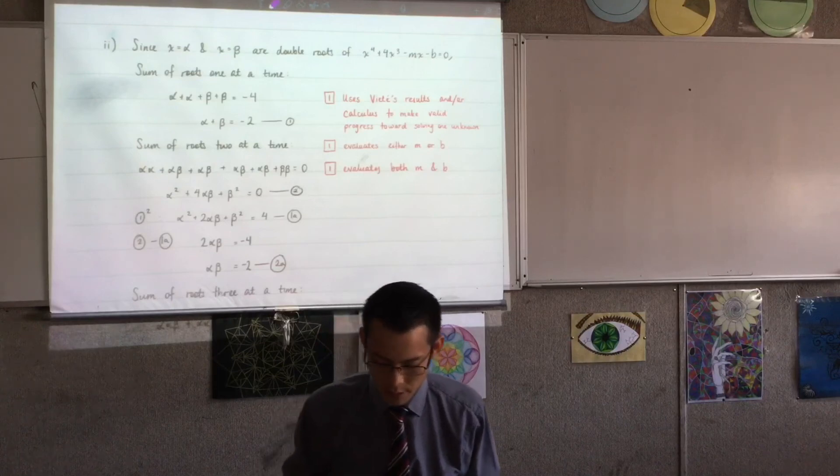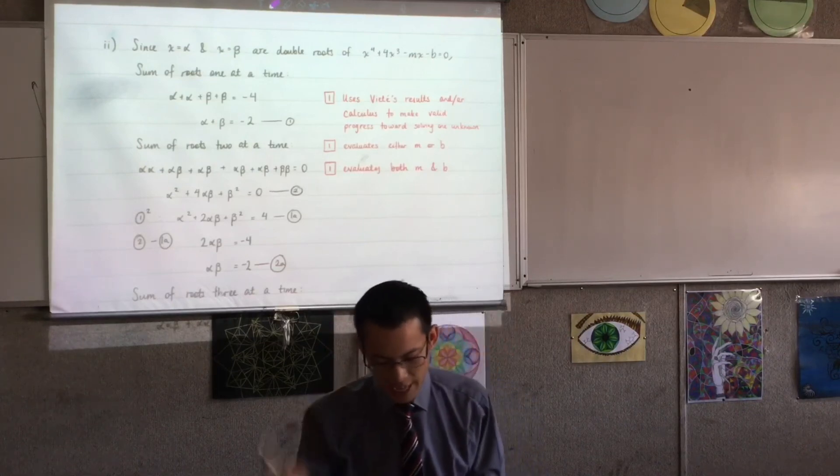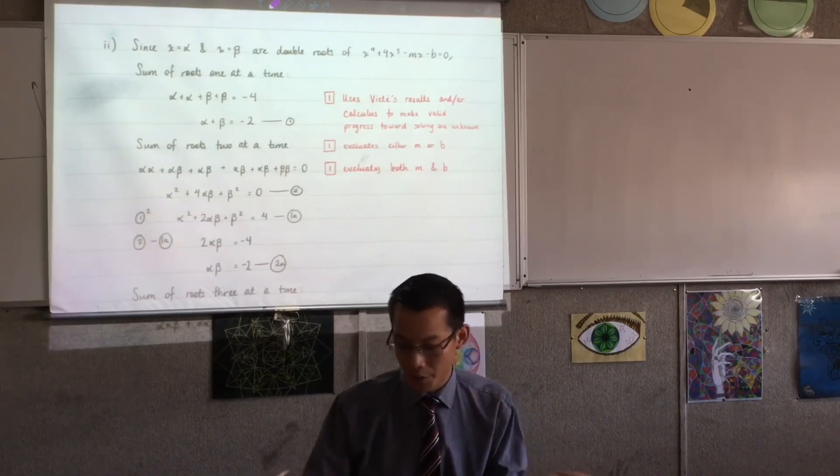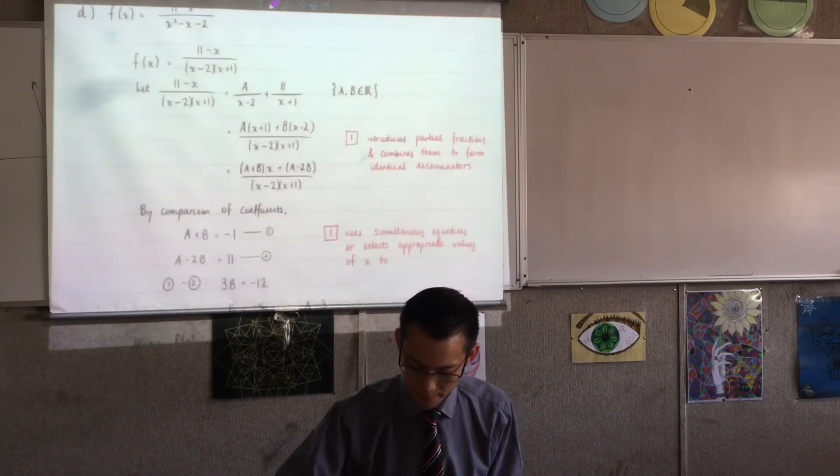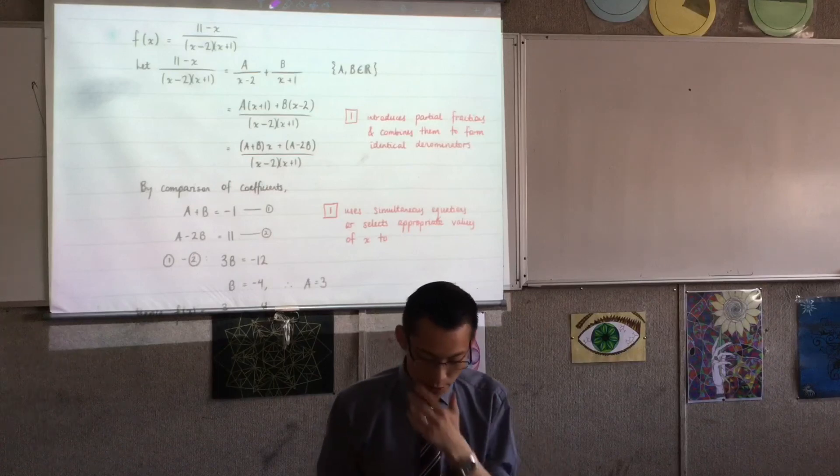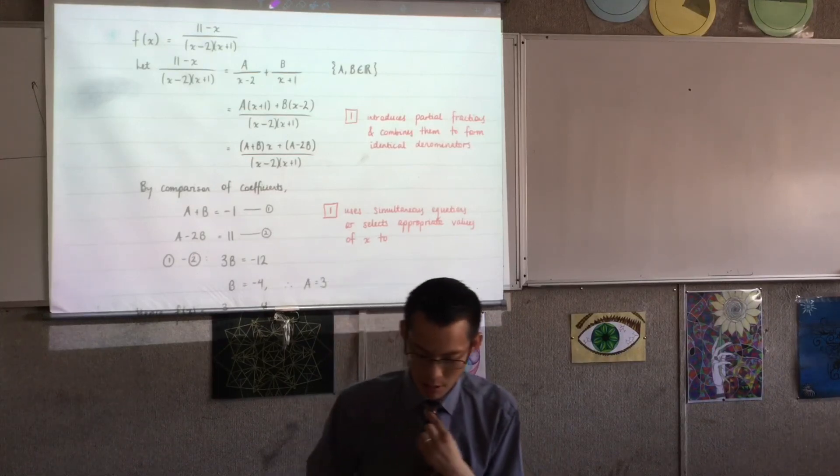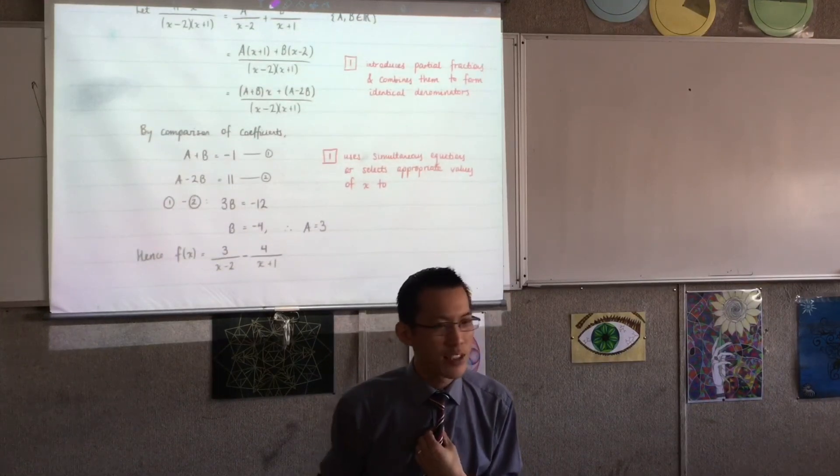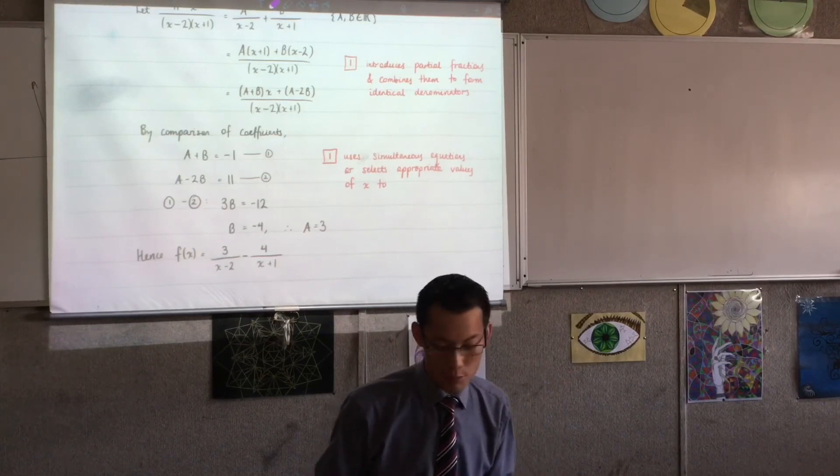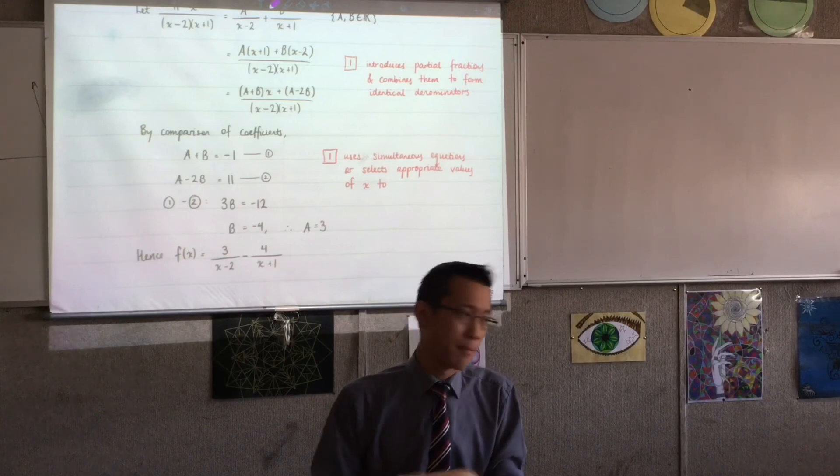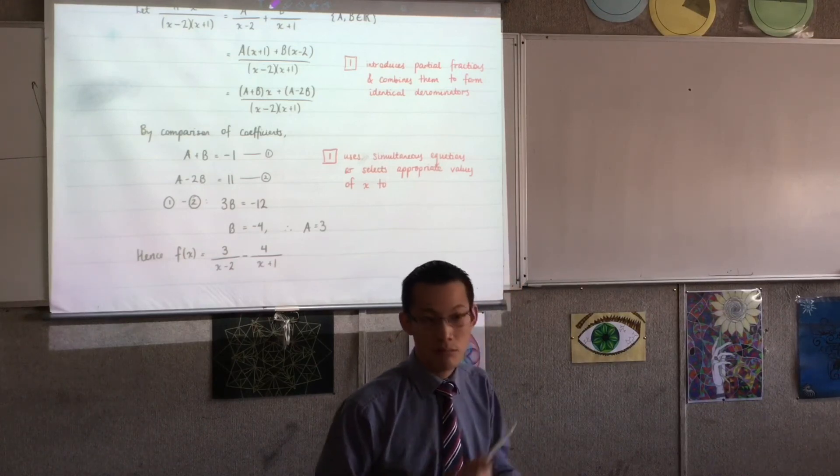Not going to dwell on this one too much because it was very well done. Use the sum and product of roots. The second mark was for getting one of the variables you were looking for and the last mark was for getting both. Partial fractions, also done pretty well. So thumbs up on that. The errors that I saw were mainly arithmetic errors. So I'm not going to dwell on them. You guys are pretty good at that. By the way, please make sure you revise that before you get into extension 2 integration because you'll need it.